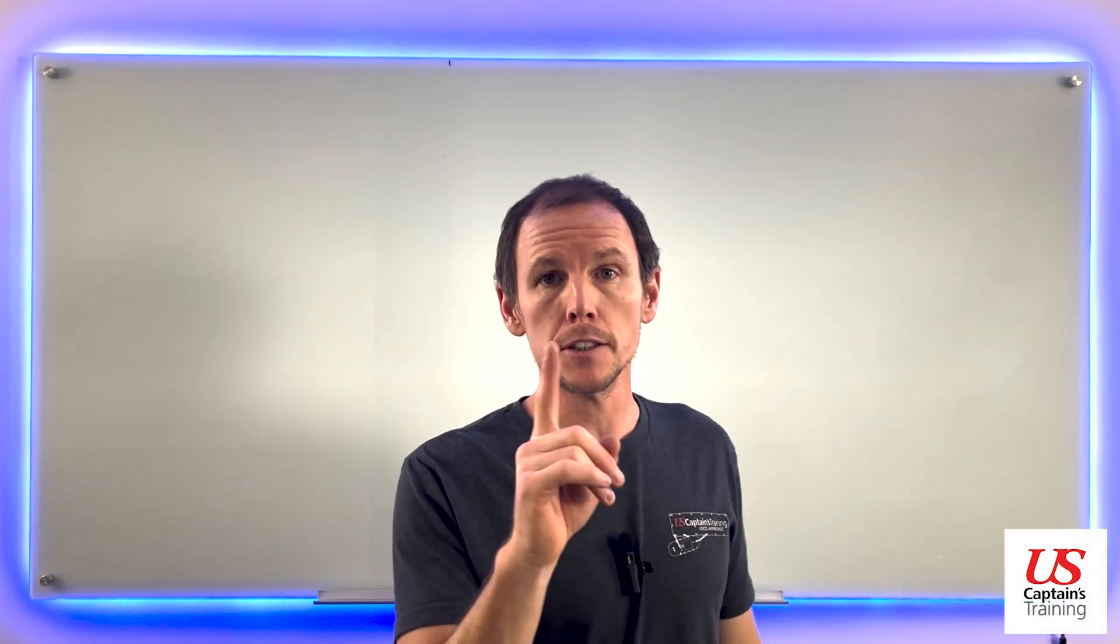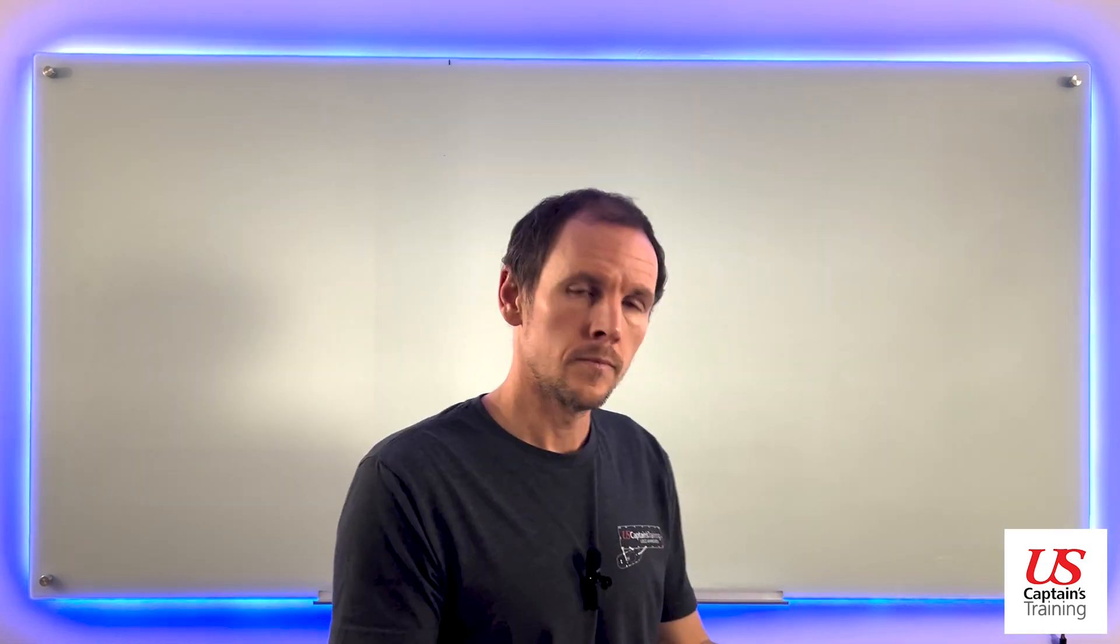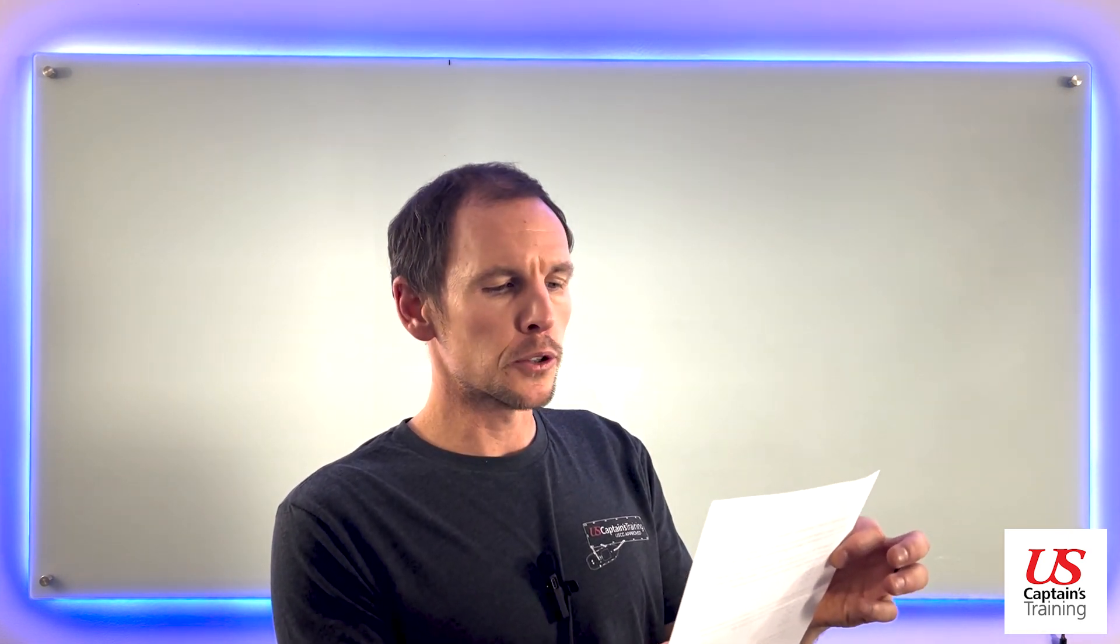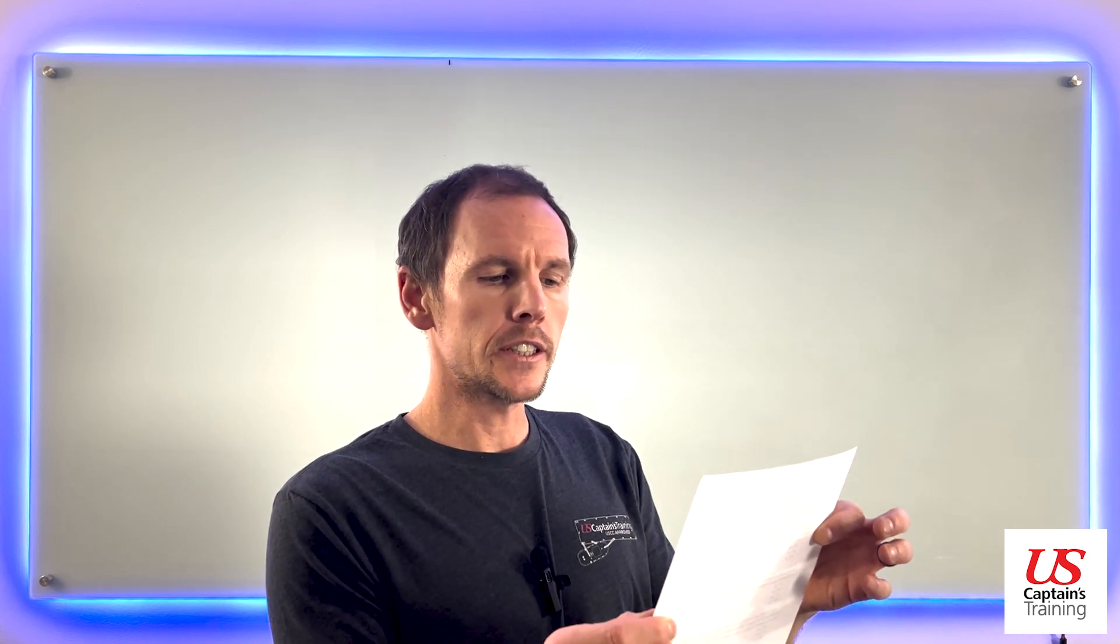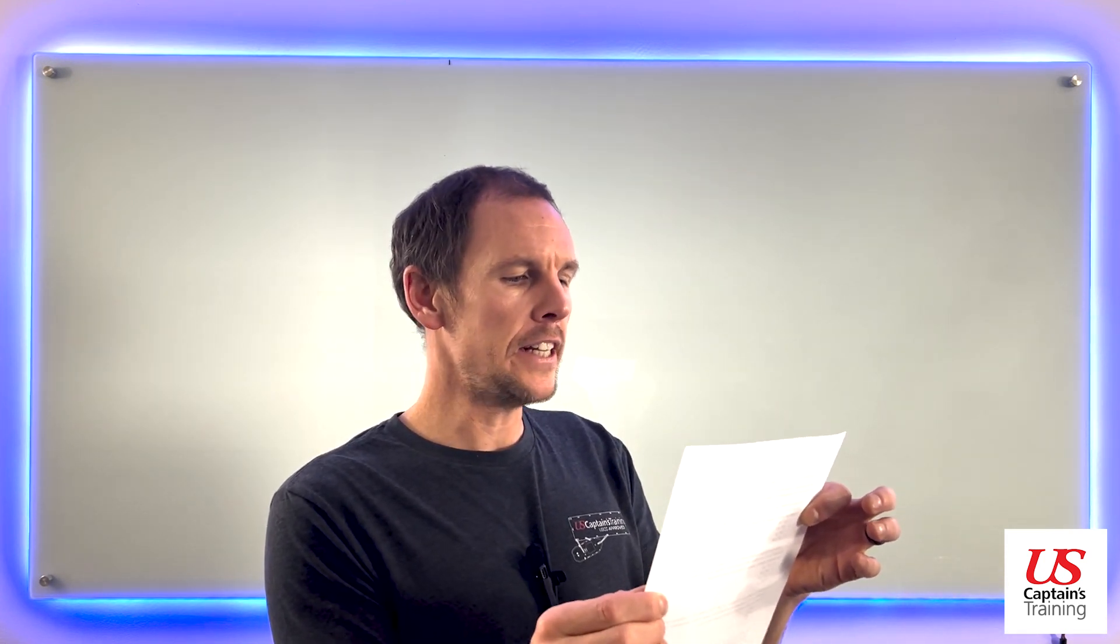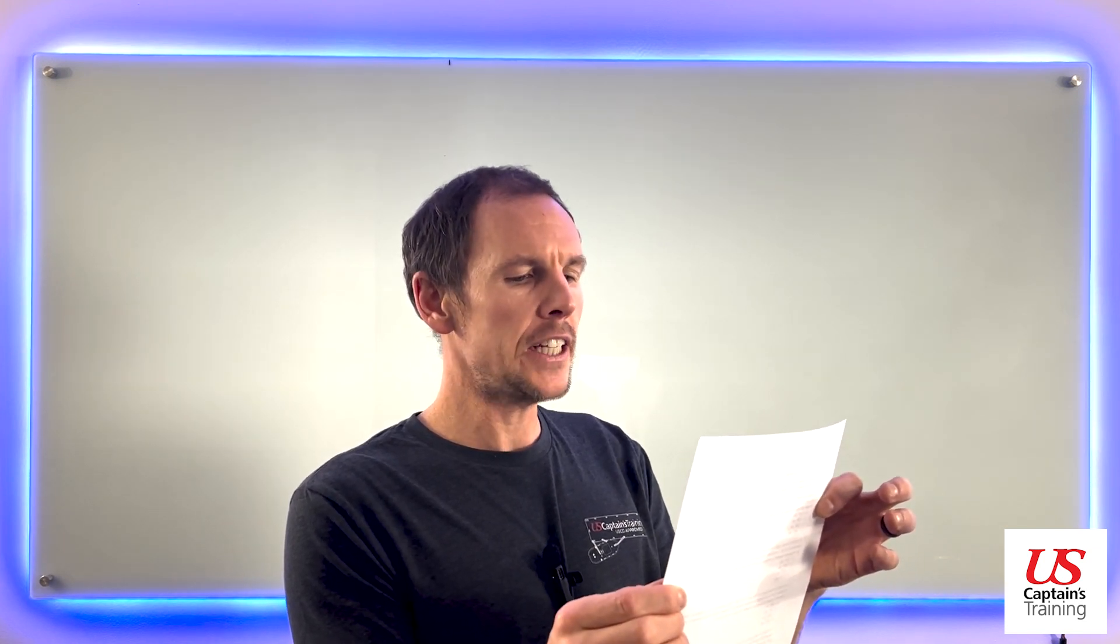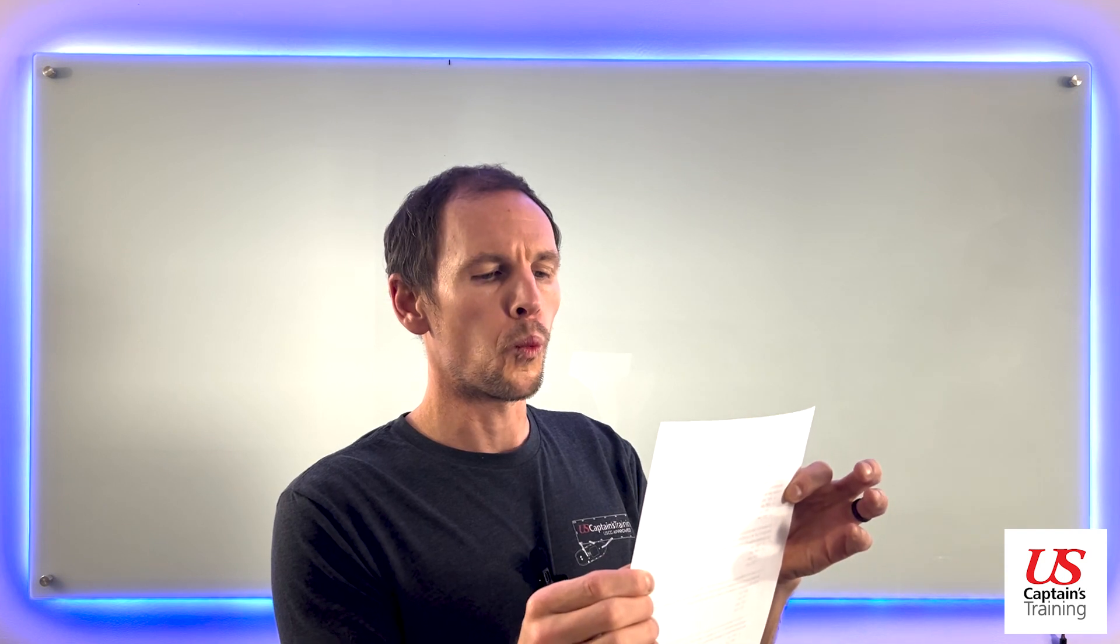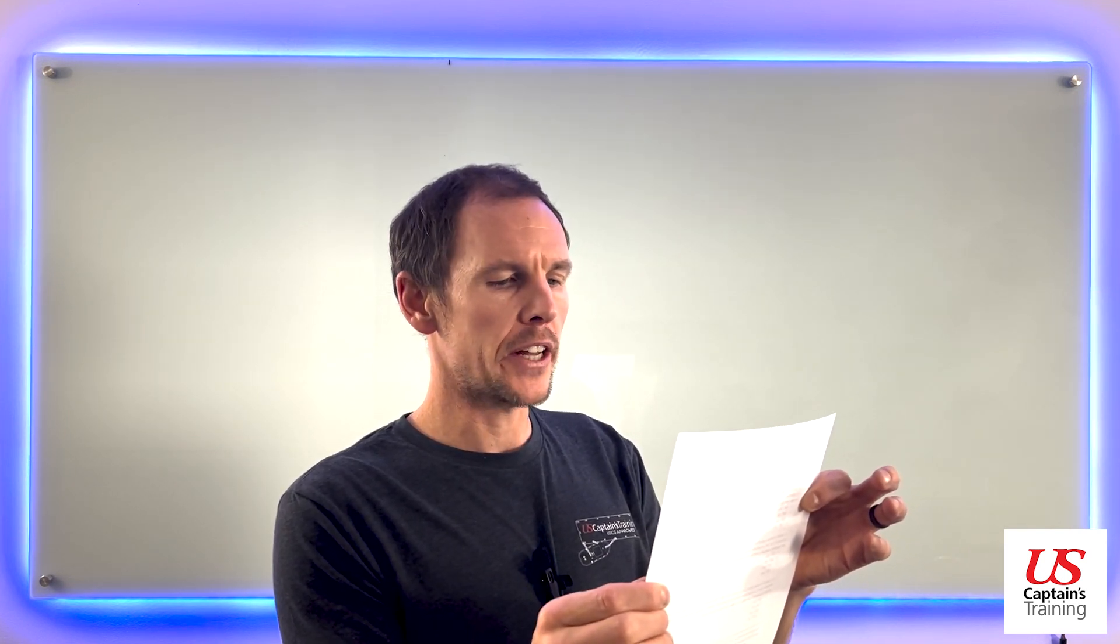Course determination practice problem one. Let's get into this problem set and check it out. The problem reads: you desire to make good a true course of 236 degrees. The variation is 8 degrees east. The magnetic compass deviation is 1 degree east. A south-southeasterly wind produces 1 degree leeway. What is the course to steer per standard magnetic compass to make the true course good?